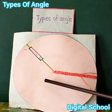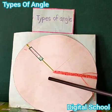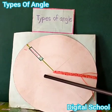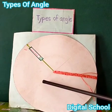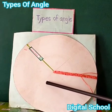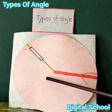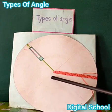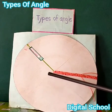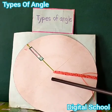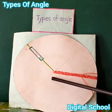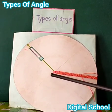Assalamu alaikum wa rahmatullahi barakatuhu, I am Abdullah. Today we will learn about types of angle. Dear friends, look at the board. This is an obtuse angle. An angle that measures more than 90 degrees but less than 180 degrees is called an obtuse angle. Thank you.